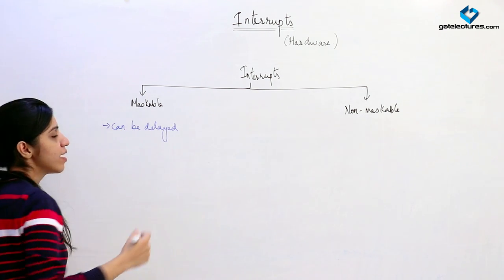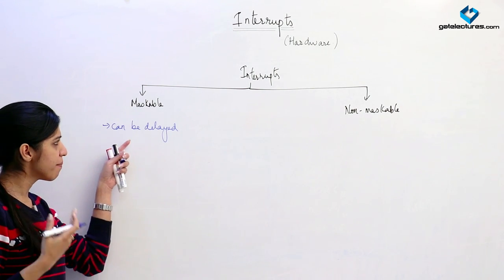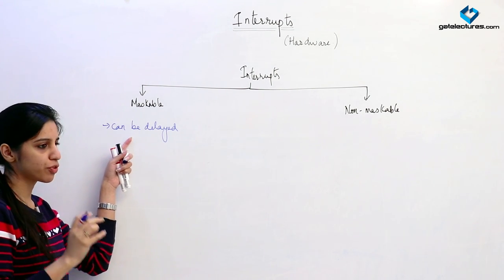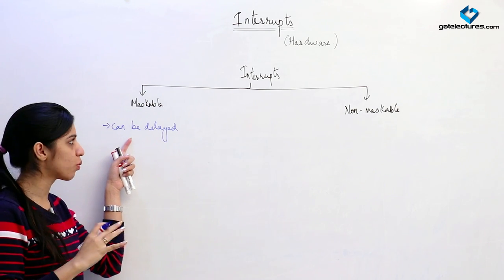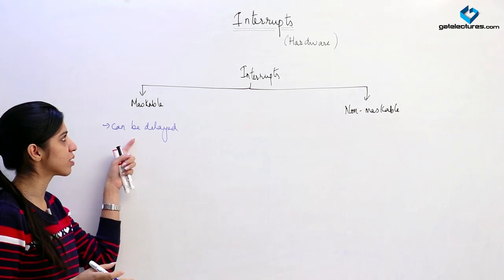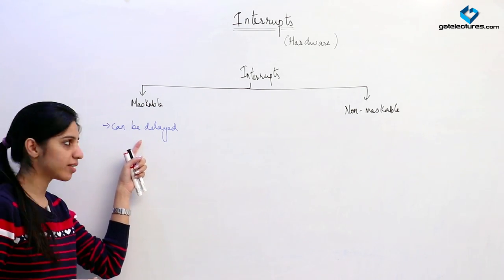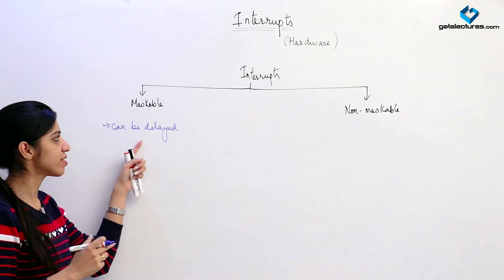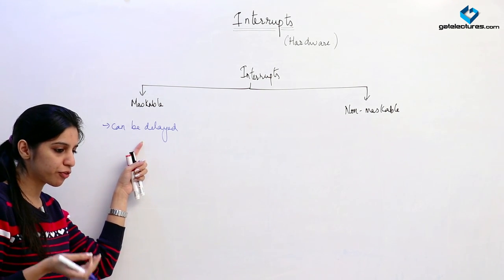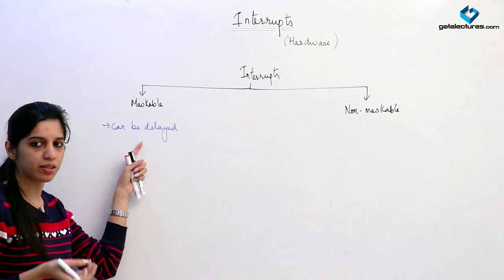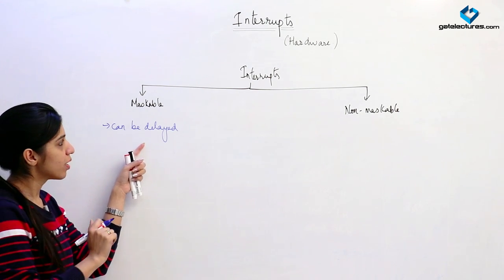We can do masking. For some reason, if you are executing some important program and you do not want any interruption, you can just mask these interrupts. They can be masked and delayed. Even if an interrupt is raised, it will not be bothered.